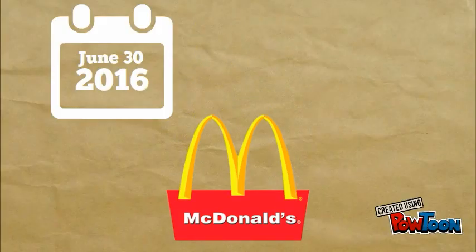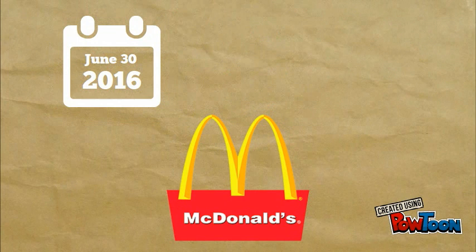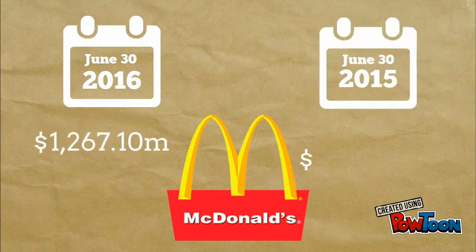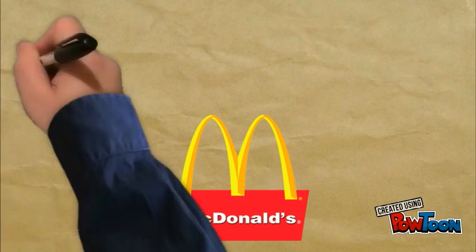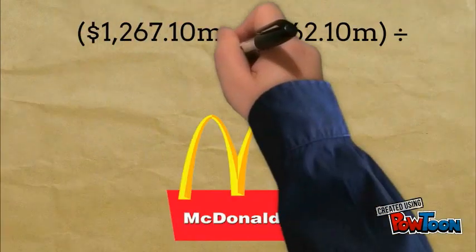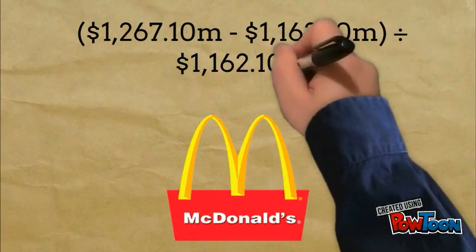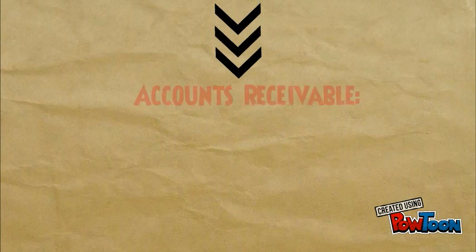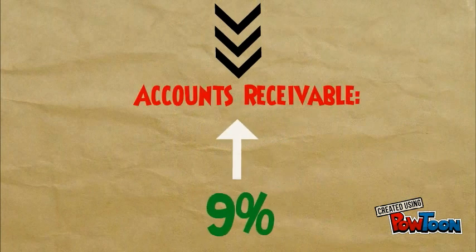Let's use McDonald's. Here we see the accounts receivable balances as of June 30, 2016 and 2015. Substitute these amounts into the formula and it equals 0.09. By conducting horizontal analysis we see that McDonald's receivables balance increased by 9% in 2016.